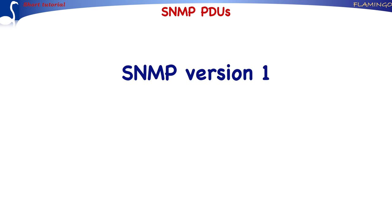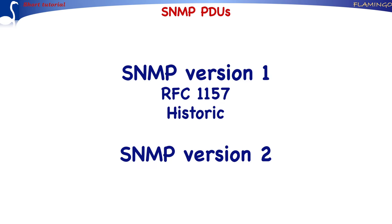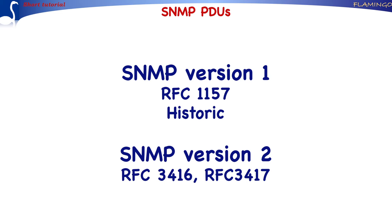An initial version of these PDUs was defined by RFC 1157 as part of the SNMP version 1 standards, which are now historic. An improved version of these PDUs was redefined later as part of the second version of the SNMP standards. Since both versions are widely used, this tutorial discusses both versions as well as their differences. Note that the latest version of SNMP, version 3, did add security but made no changes to the PDU definitions.